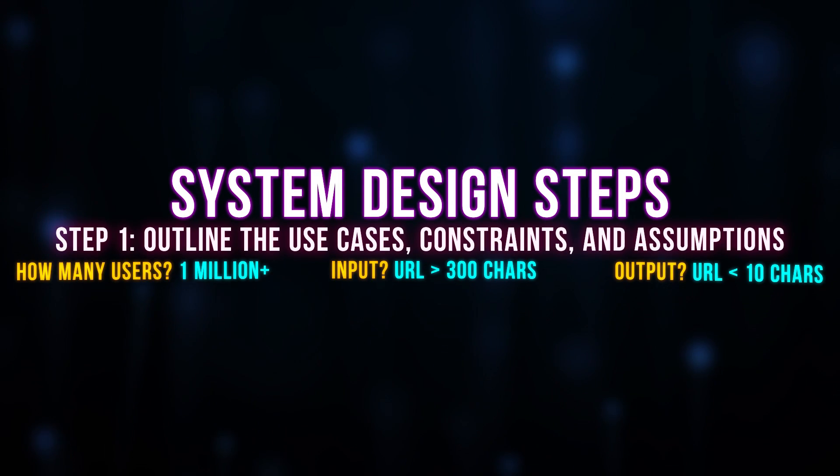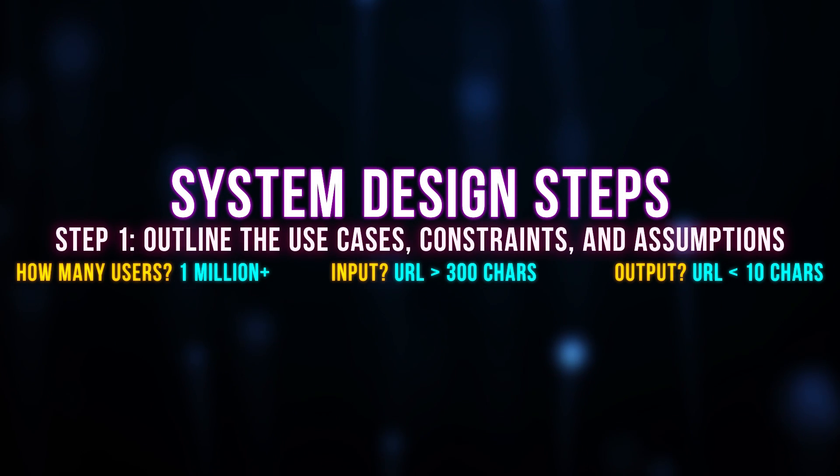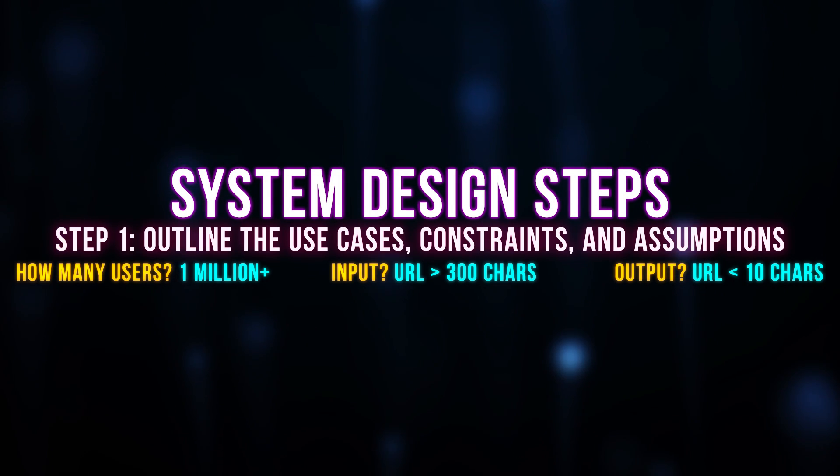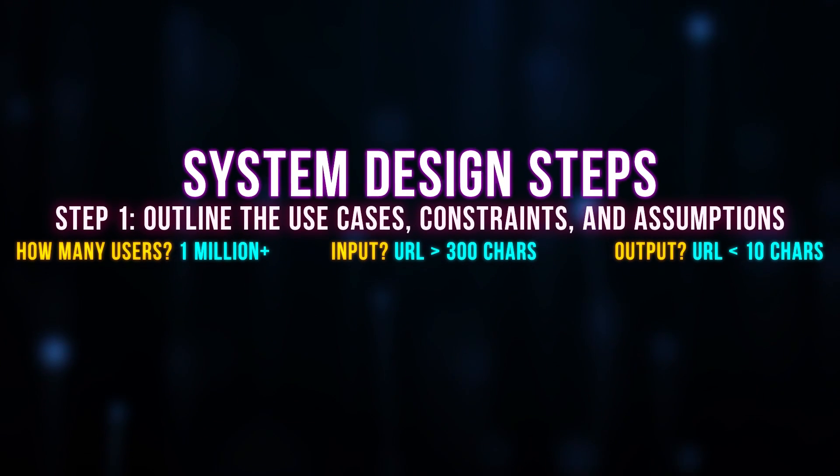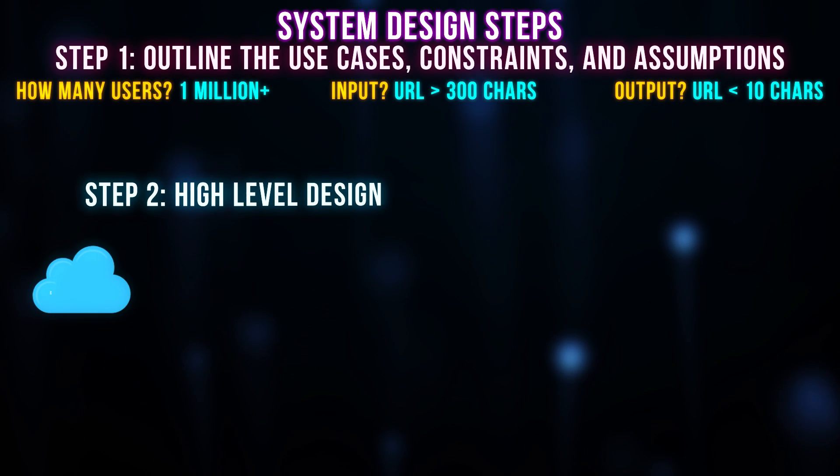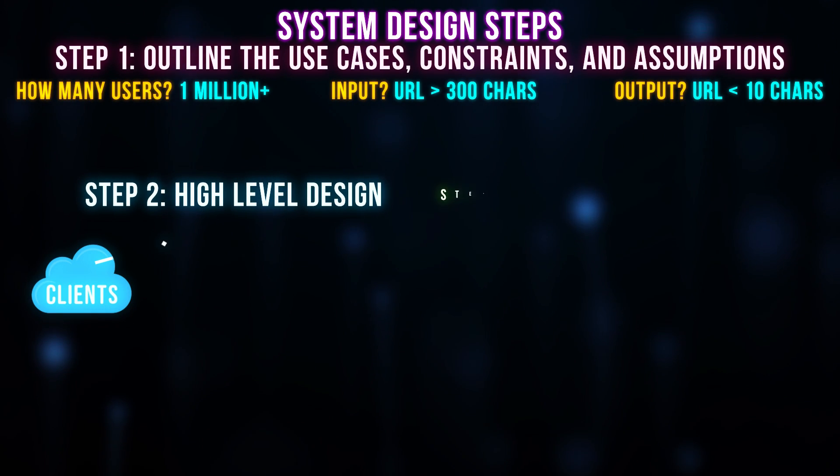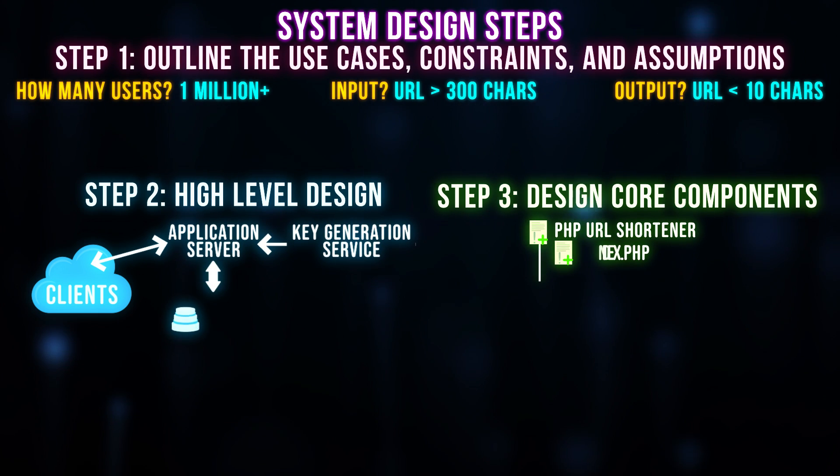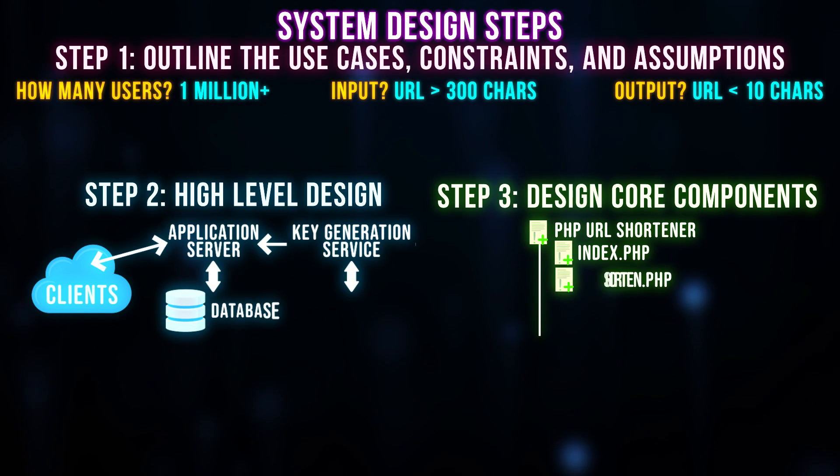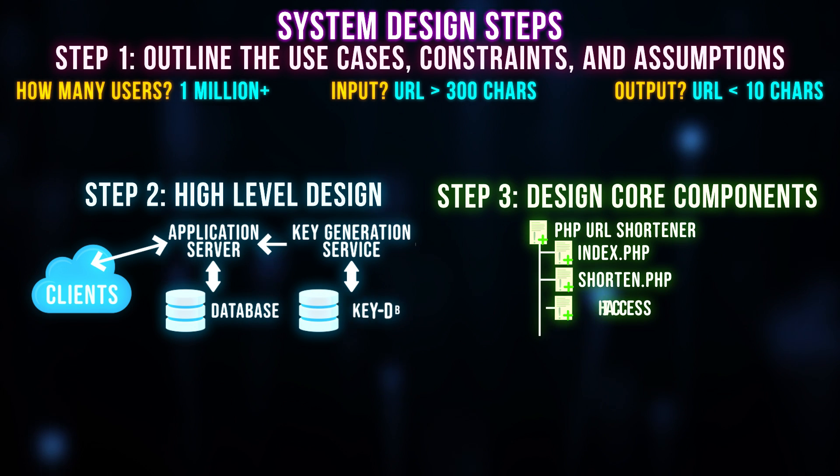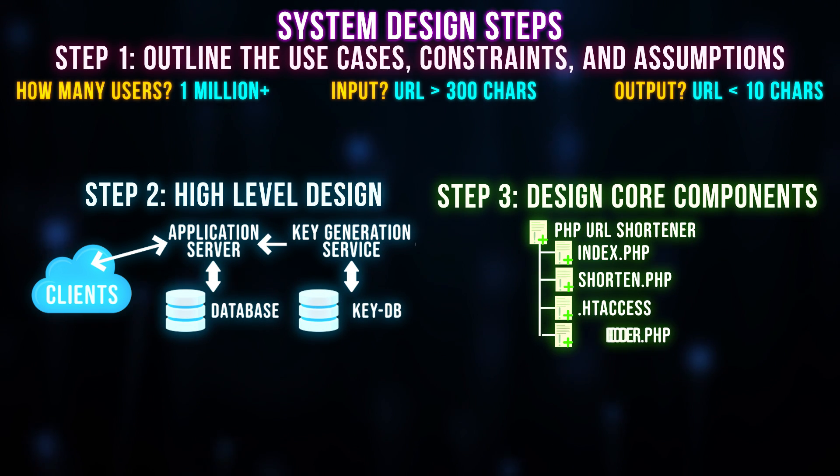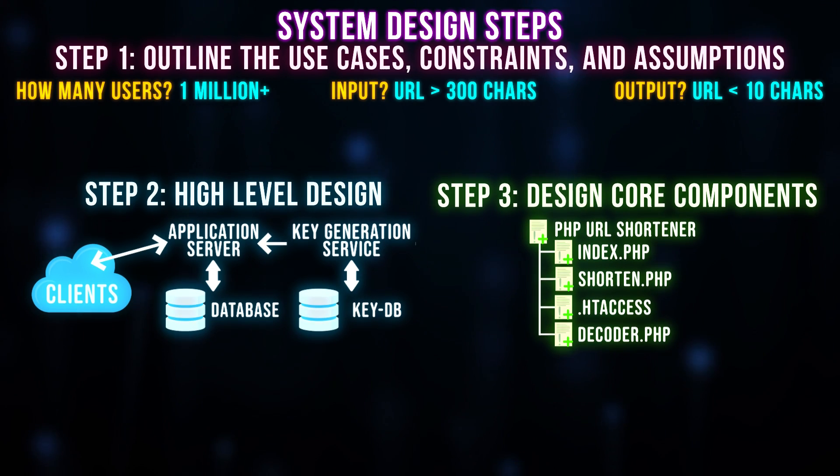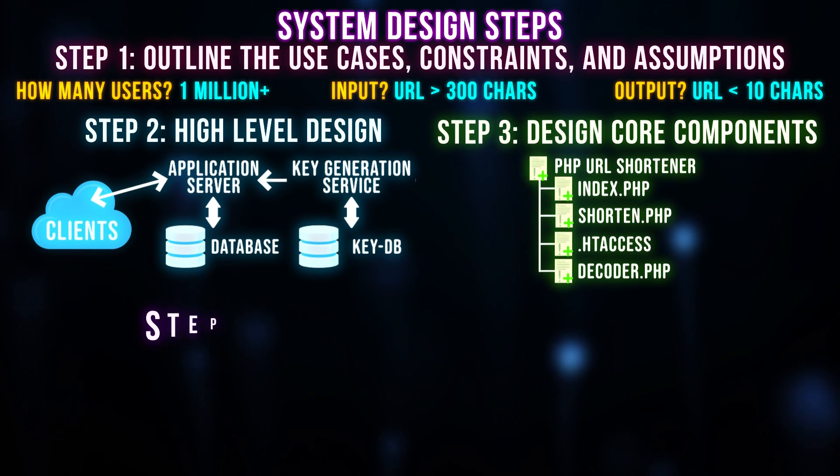First, outline the use cases, constraints, and assumptions about the system. This includes questions like who's going to use it, what are the inputs and outputs of the system, and how much data do we expect to handle. Then create a high-level design using boxes and arrows. Next, design the core components. For example, if you're asked to design a URL shortening service, discuss generating and storing a hash of the full URL. Will you use MD5 or Base62 for encoding? How will you translate the hashed URL back to the full URL? What does the API for this look like?